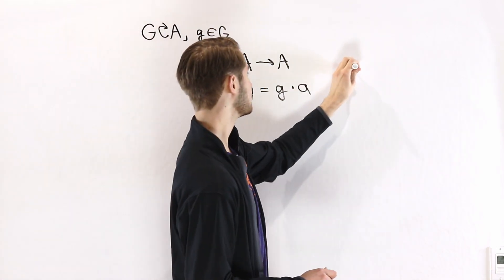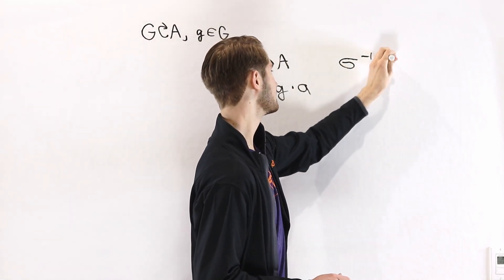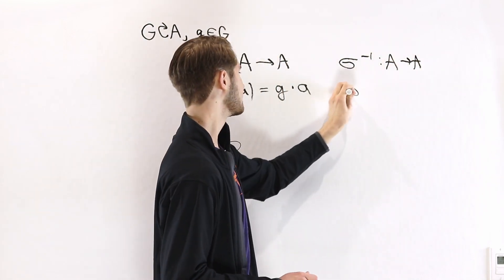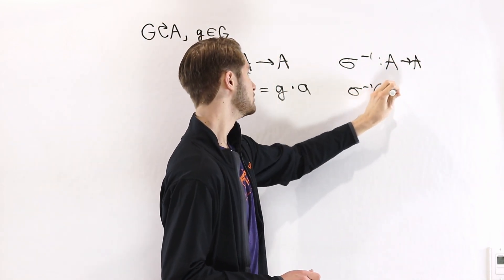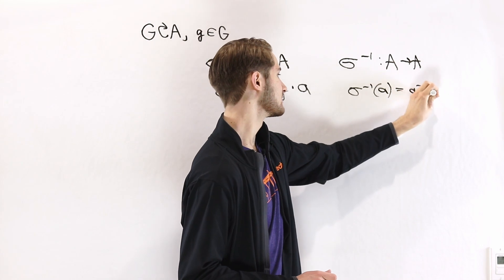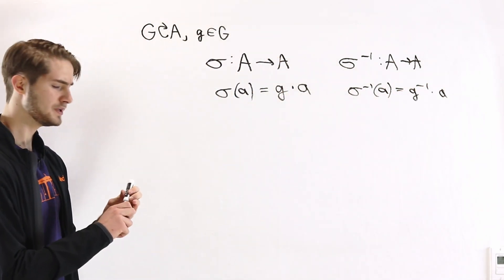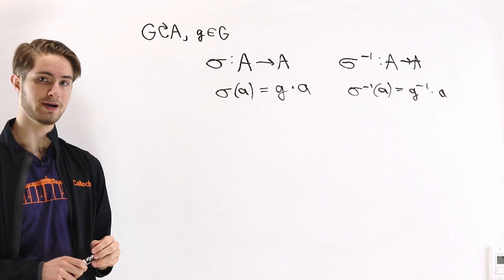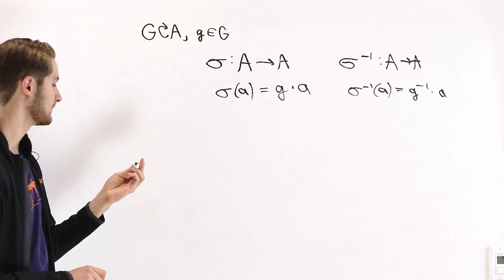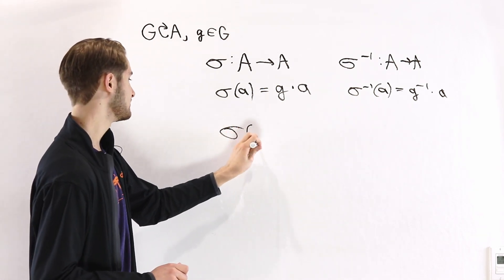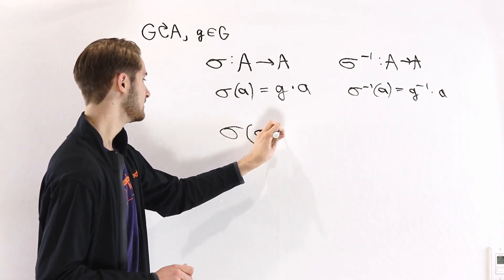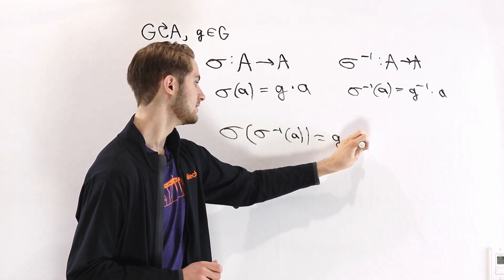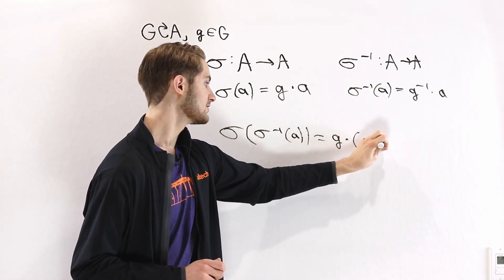Consider the inverse map σ⁻¹ going from A to A, where σ⁻¹(a) = g⁻¹·a. We can see pretty immediately that these are going to be inverse maps, but we can also double-check. First, σ(σ⁻¹(a)) is going to be g times g⁻¹ times a.